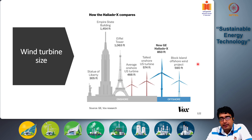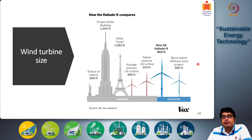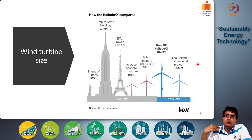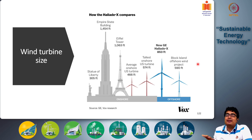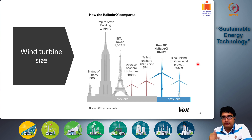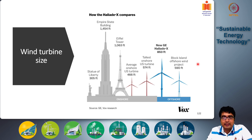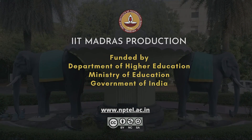In summary, we discussed the fundamentals of wind turbines and how to evaluate available wind power. In the next class, we will examine wind speed distributions in more detail — how to measure wind speeds, find average and most probable wind speeds, and use that information to design optimally rated wind turbines. Thank you for listening.